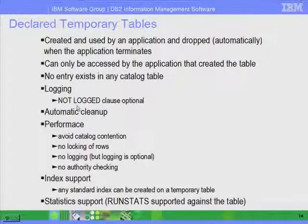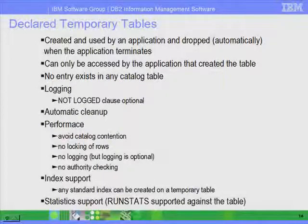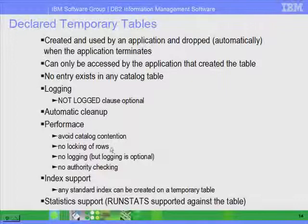Moving on to declared temporary tables. These are temporary tables in memory created by your application. Many applications can create their own temporary table, and they will be dropped automatically once the application disconnects from the database. These tables are useful for performing temporary operations as part of your application. Because you have your own copy of this table, there will be no contention, no locking, no locks taken on any rows.